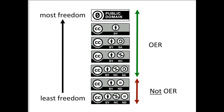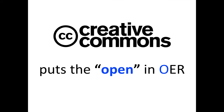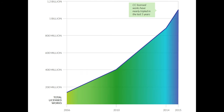We want to be really careful — and frankly stay away from — the two ND licenses. The reason is they violate the 5Rs definition, the legal permissions we want with OER. If something is under No Derivatives, you can't modify it, so you're not allowed to revise the work and you're not allowed to remix it. With OER, we stay away from those two licenses. At Creative Commons, we like to say that we put the open in OER — if you find OER, it's probably in the public domain or it has a Creative Commons license on it.